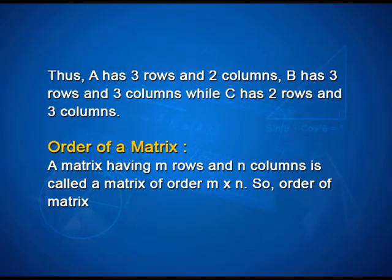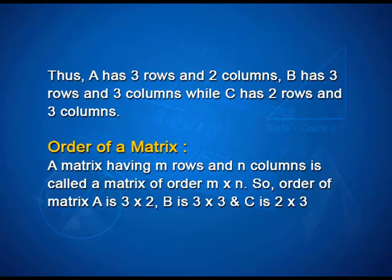Now, what is an order of a matrix? A matrix having m rows and n columns is called a matrix of order m by n. So, order of matrix A is 3 by 2, order of matrix B is 3 by 3 and order of matrix C is 2 by 3.